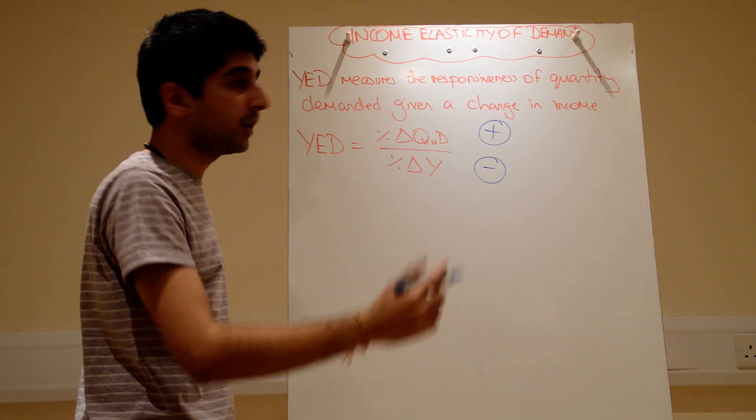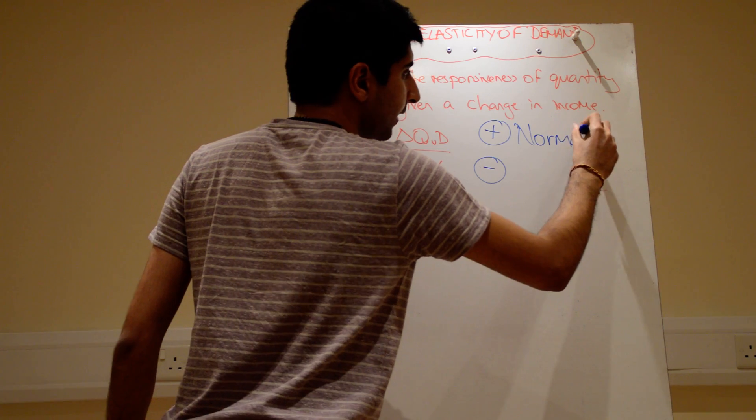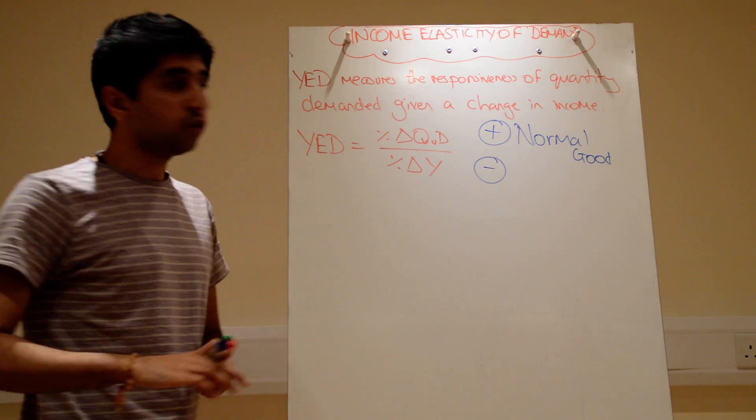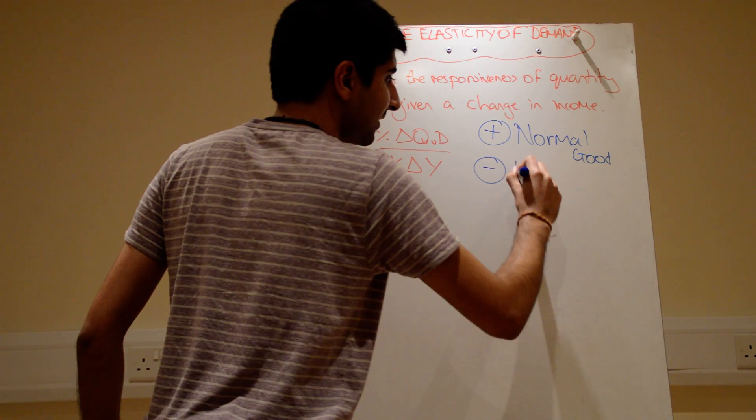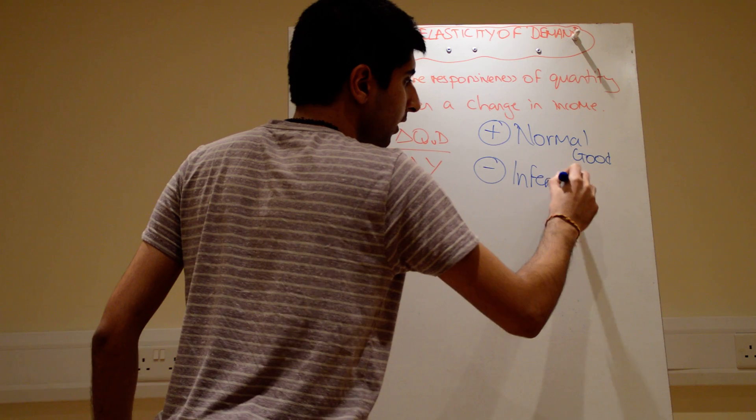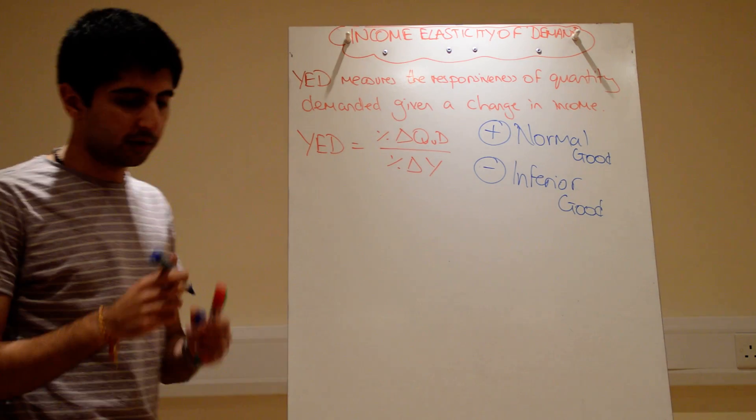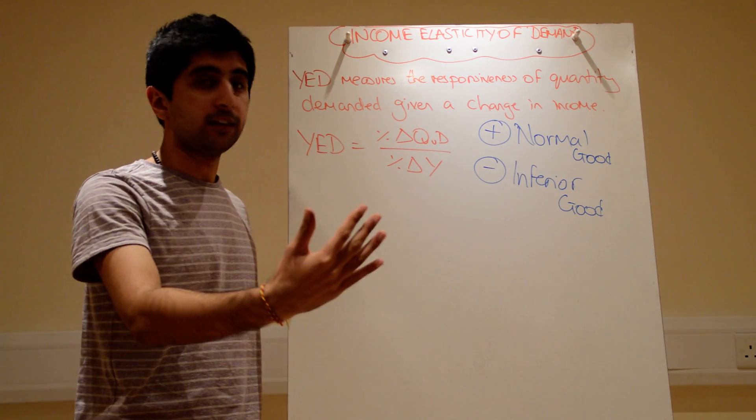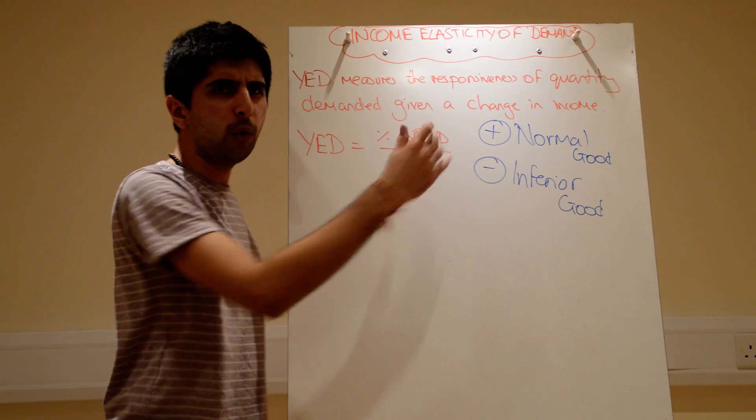Well, if you get a positive number at the end, it means that the good you're working with is a normal good. Whereas if you have a negative number, the good you're working with is an inferior good. So remember your definitions of normal and inferior good. Normal good, when incomes increase, demand shifts to the right. When incomes fall, demand shifts to the left. Normal relationship.